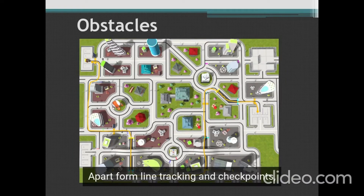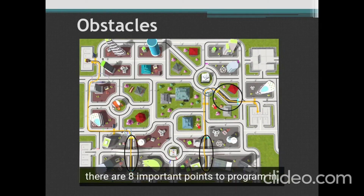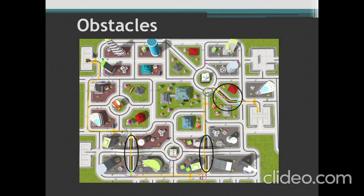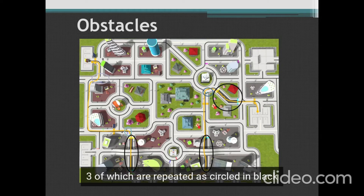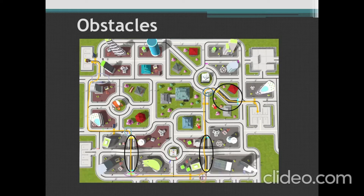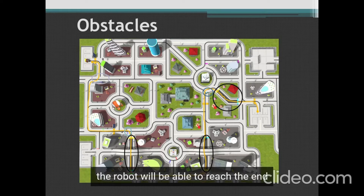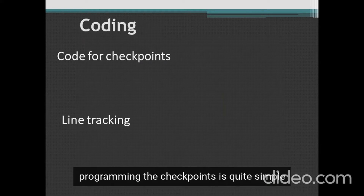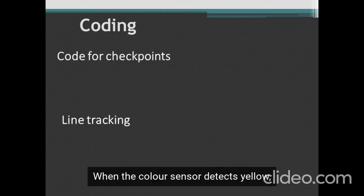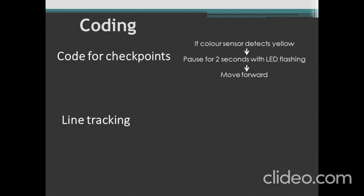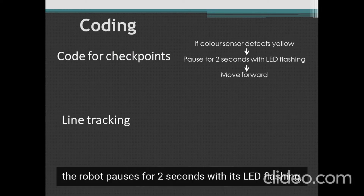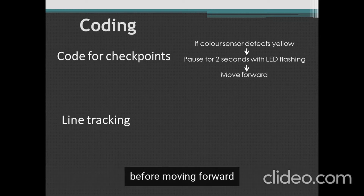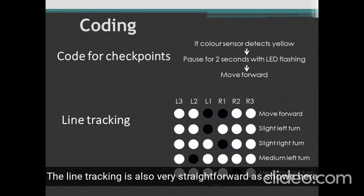Apart from line tracking and checkpoints, there are eight important points to program in, three of which are circled in black. After all these points have been overcome, the robot will be able to reach the end. Moving on to the code, programming the checkpoints is quite simple: when the colour sensor detects yellow, the robot pauses for two seconds with its LED flashing before moving forward.